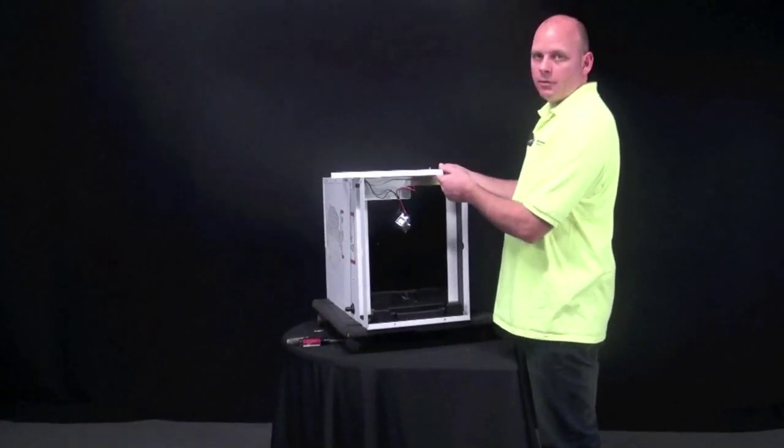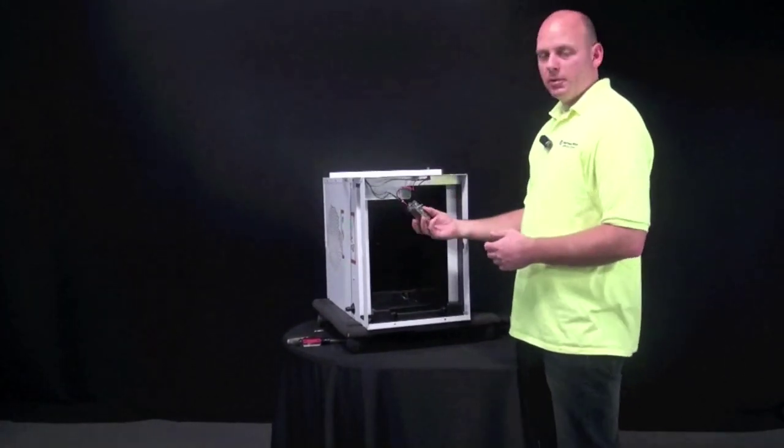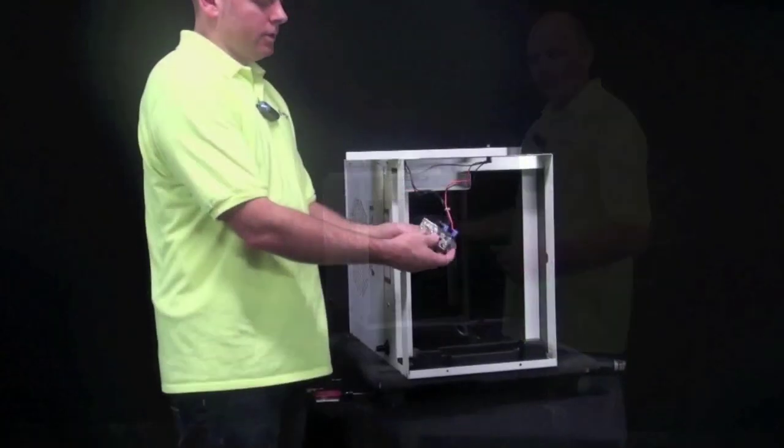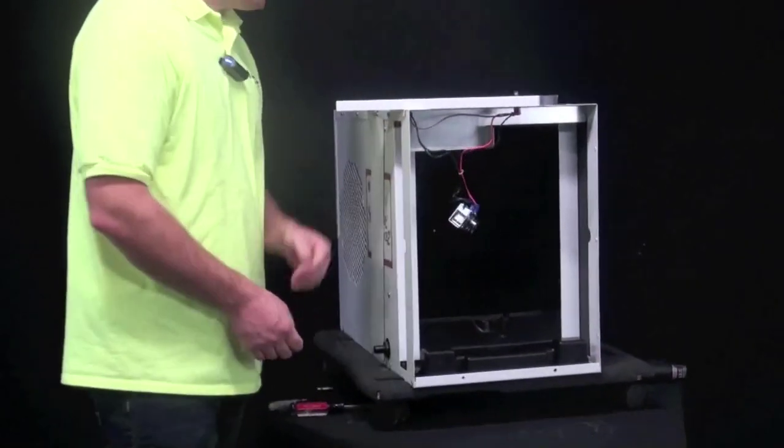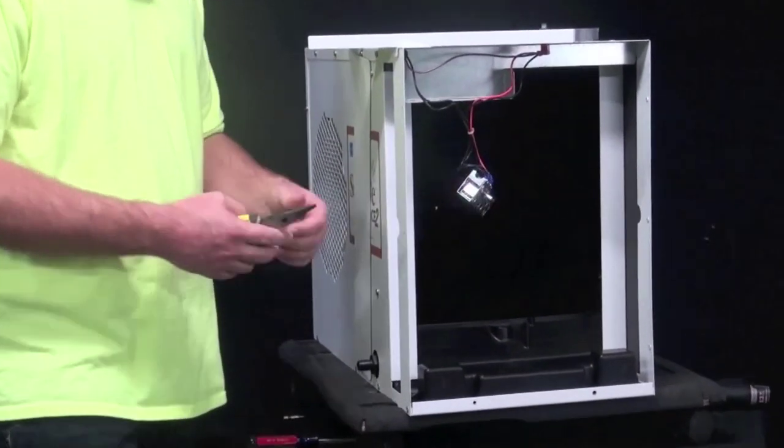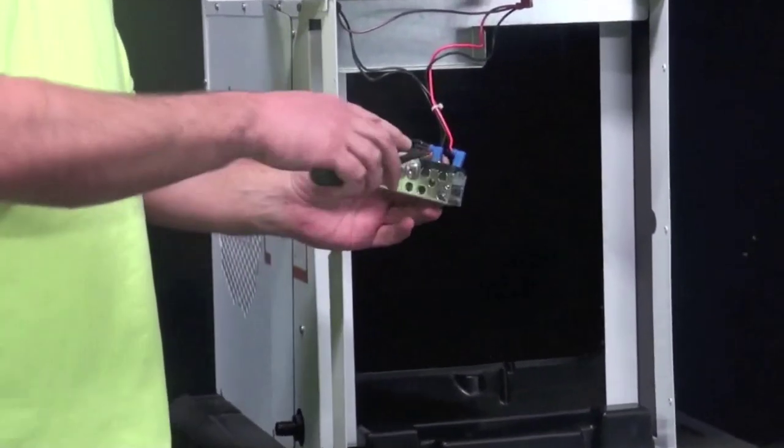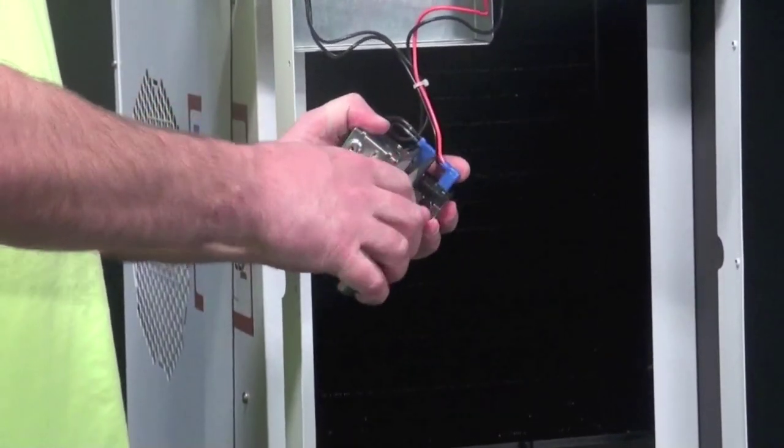Now with the grille off, you'll notice the dehumidistat hanging. From here, the next step, you'll want to use your needle nose pliers. And you'll notice there's two wire terminals, so you just pull those off of the terminals.